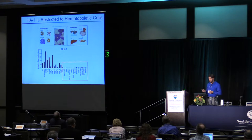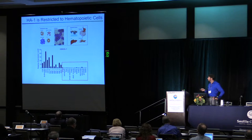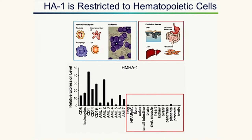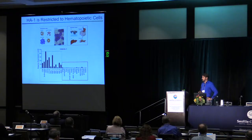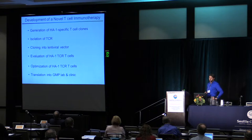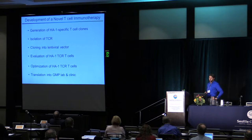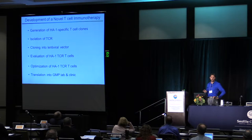We started by investigating protein expression. We performed qPCR looking for the mRNA of the HMHA1 protein. We did not detect this mRNA in any of the epithelial cells we investigated. However, the mRNA is present in the hematopoietic cells we investigated, including leukemia. Taking that into consideration, we decided to generate T-cell immunotherapy targeting the HA1 antigen.